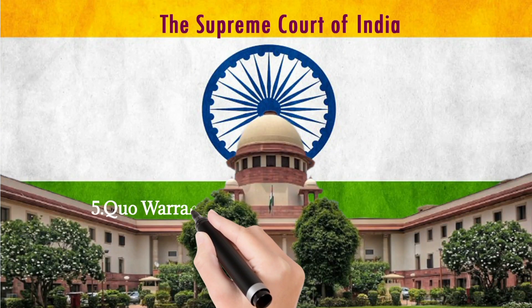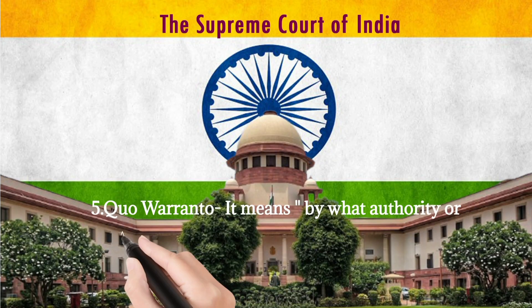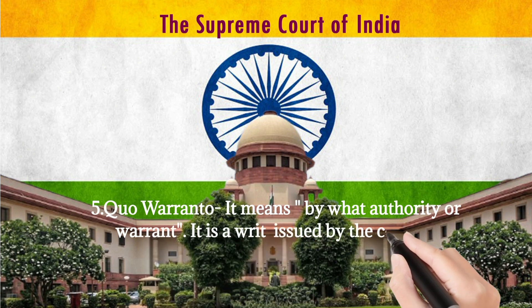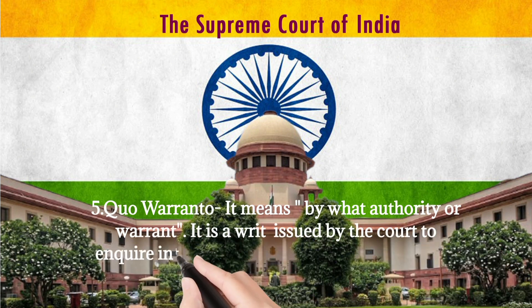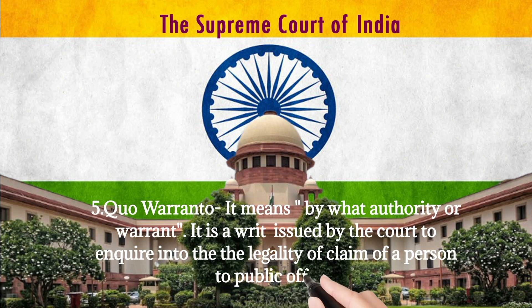Number 5: Quo Warranto. It means 'by what authority or warrant.' It is a writ issued by the court to inquire into the legality of a claim of a person to a public office.